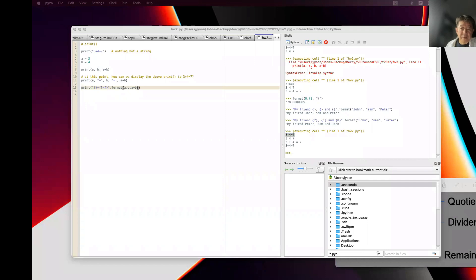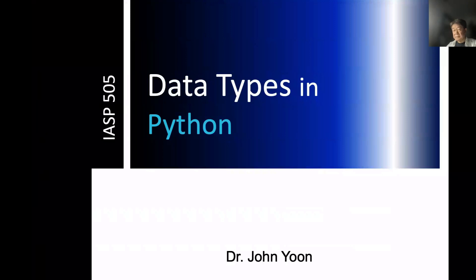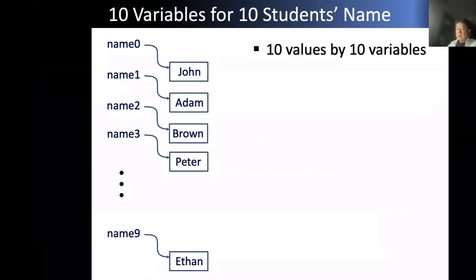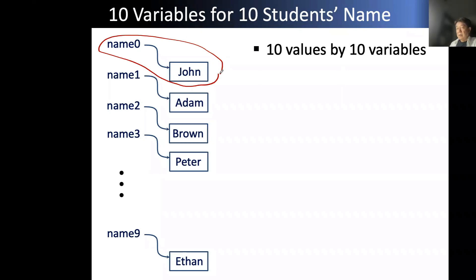Now we need to jump to the next module of the slide, which is data types. Your data types in Python — we already understand: I want to handle John as a name, so I define a variable called name. Name holds the value John. So far so good. What if I have 10 values? Then we may need to create 10 variables — name zero, name one, name two, name three... through name nine.